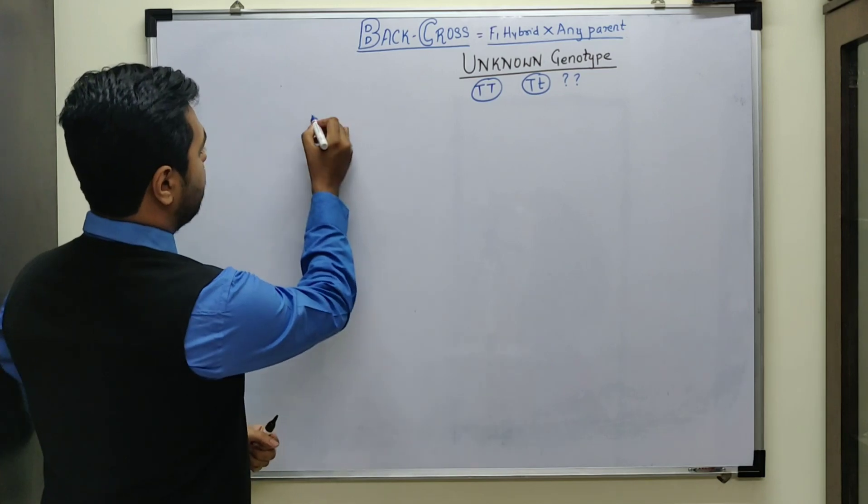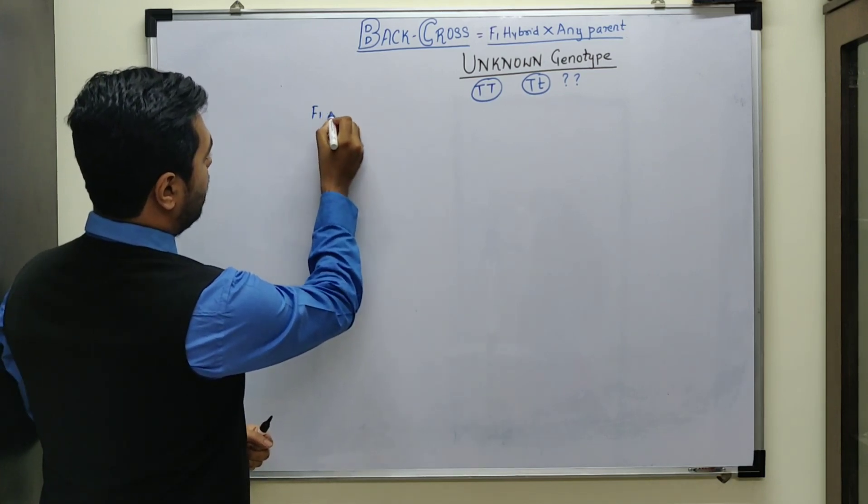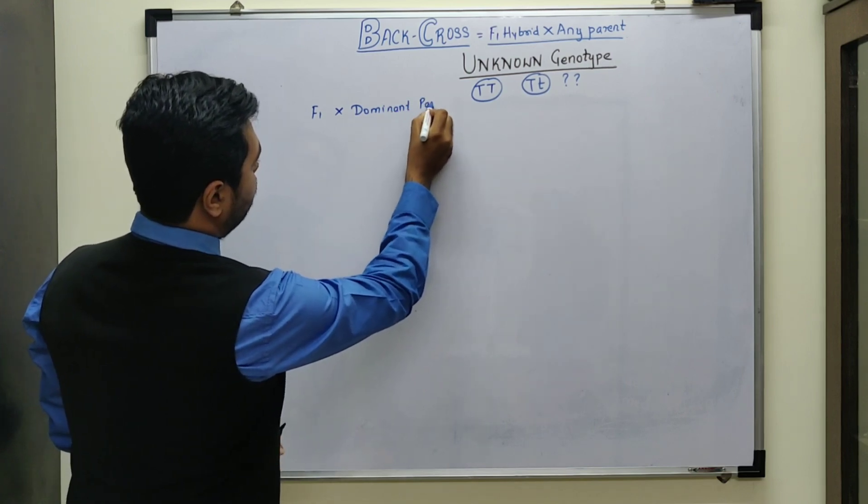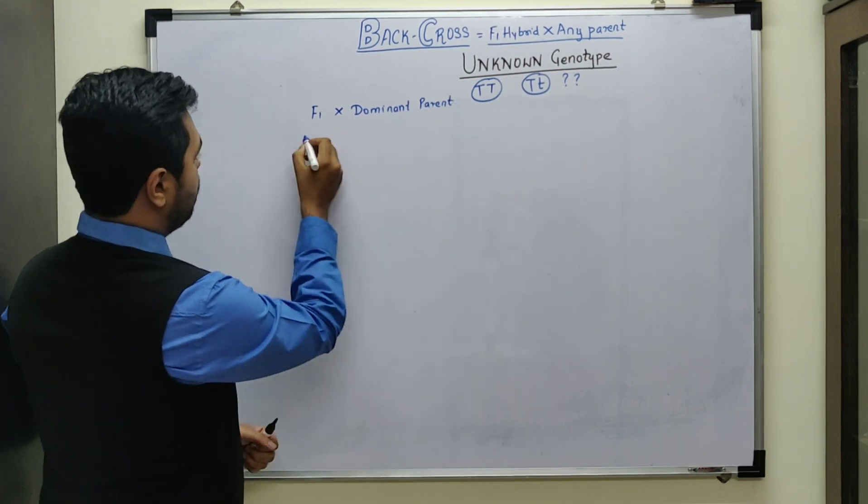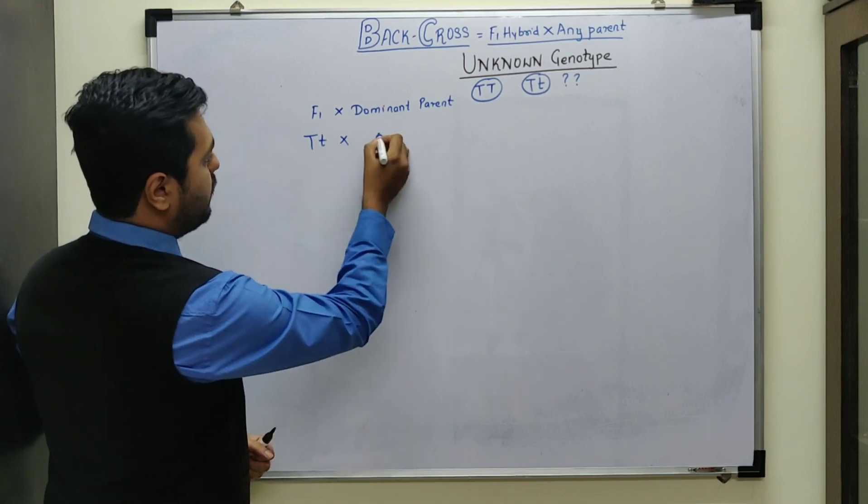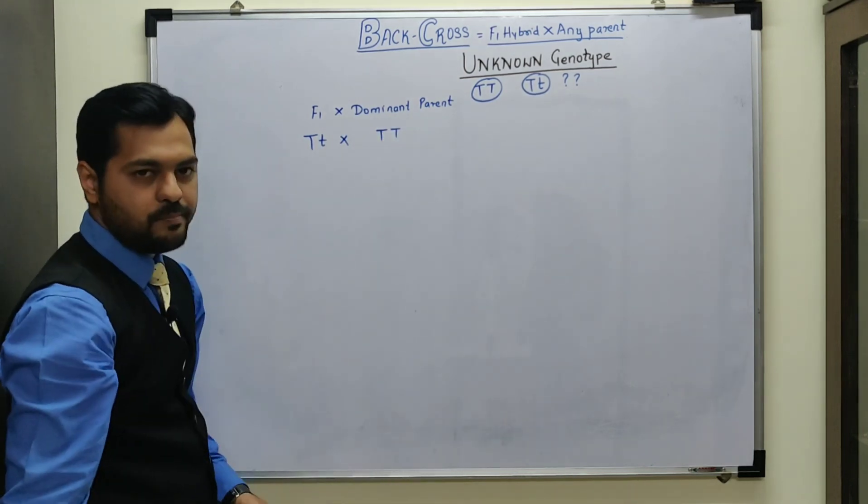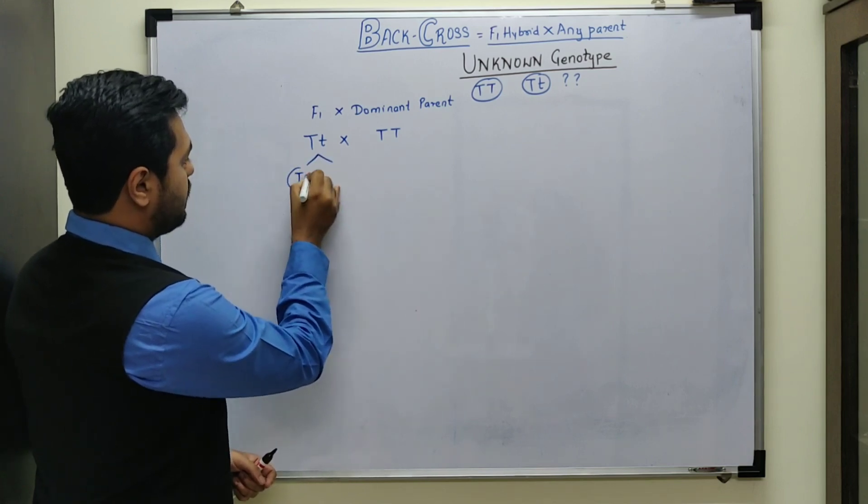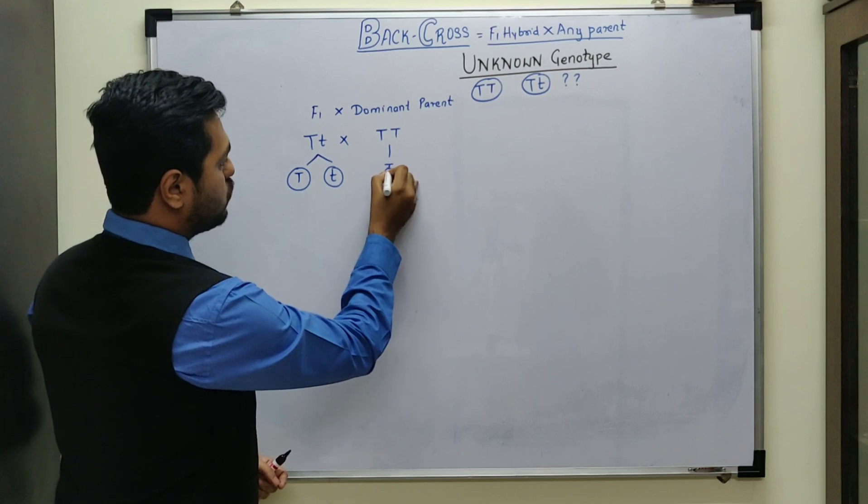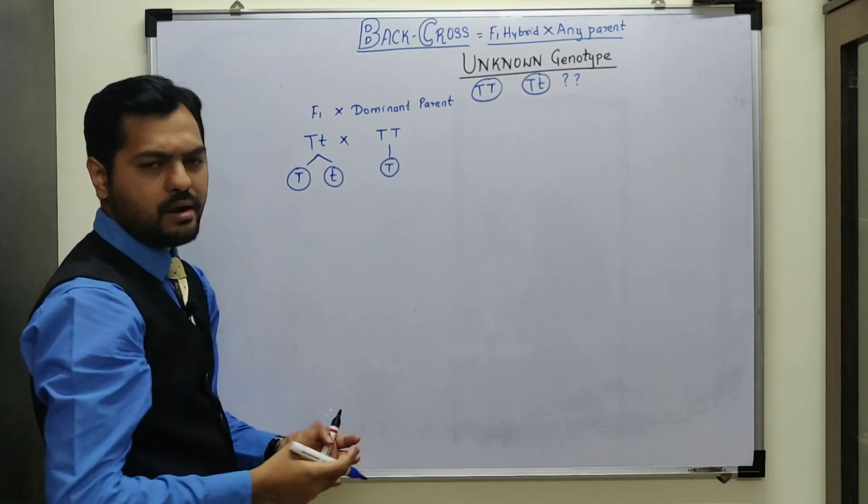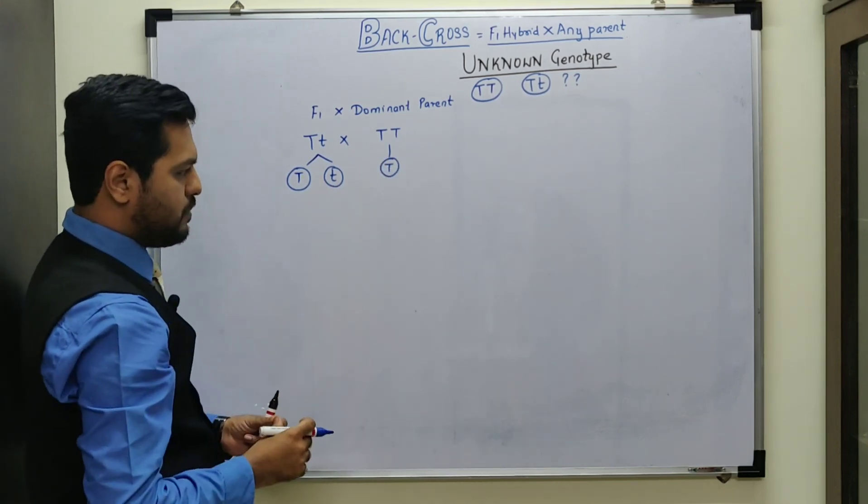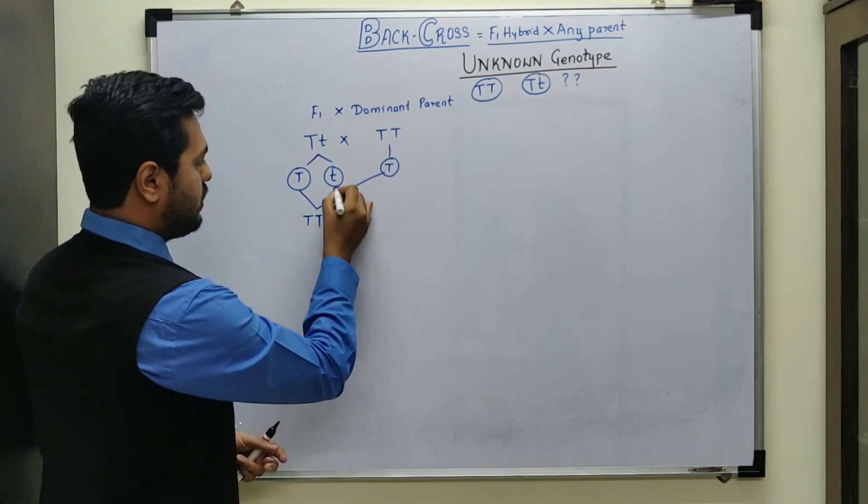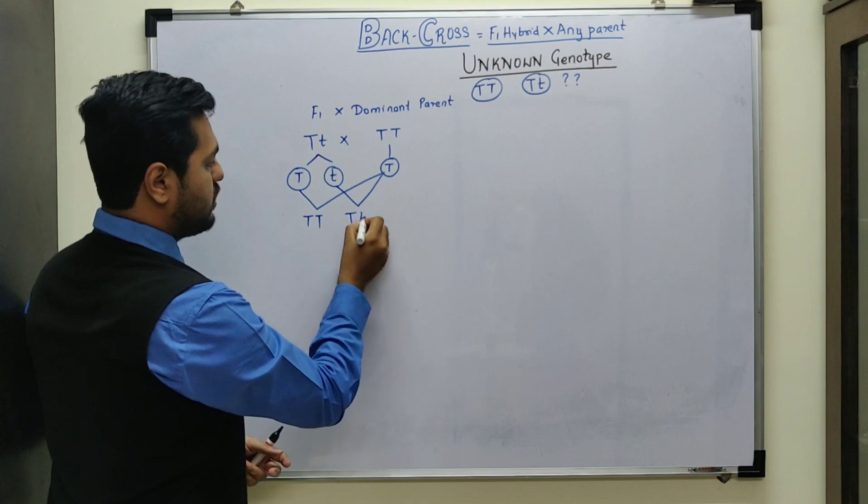So suppose we are crossing the F1 hybrid with a dominant parent. In such a case wherein we are taking the example of height, F1 hybrid is capital T small t and dominant parent is capital T capital T. Here this parent is going to produce two types of gametes, that is capital T and small t. This parent produces capital T two times, it is producing only one type of gamete. On fusing the gametes, this with this will produce capital T capital T. This with this produces capital T small t.